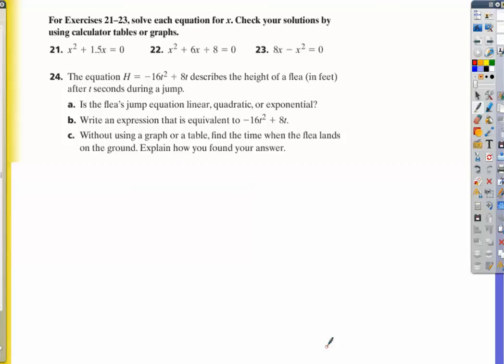All right, the equation h equals negative 16t squared plus 8t describes the height of the flea in feet after t seconds during a jump.